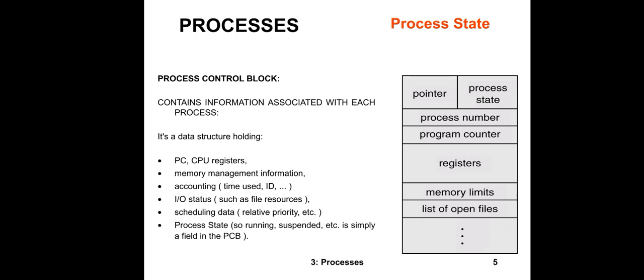How that block is maintained by the operating system. The process control block is a block which tracks the information of the states of the processes. It contains the information associated with each process — it is a data structure that holds various terms.